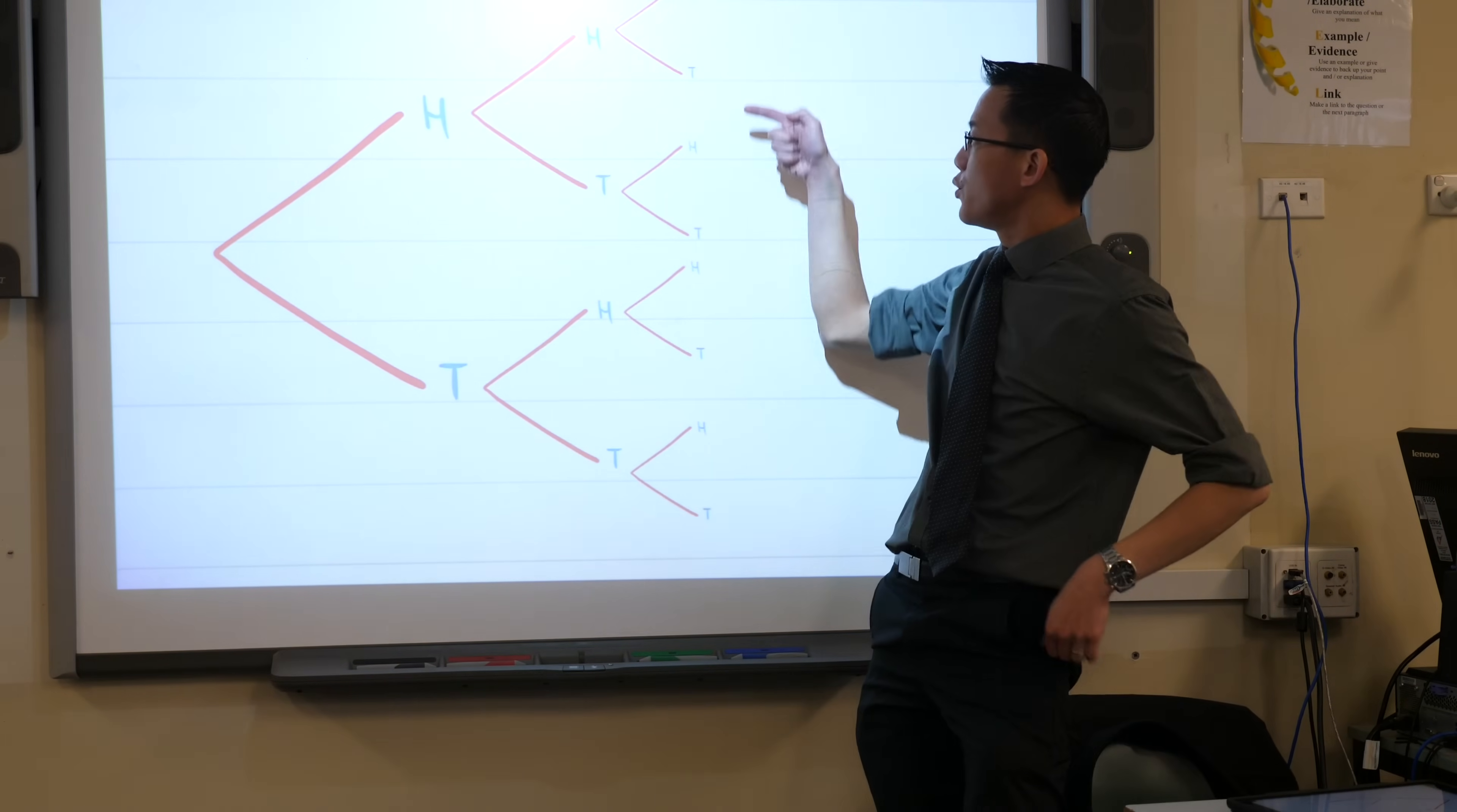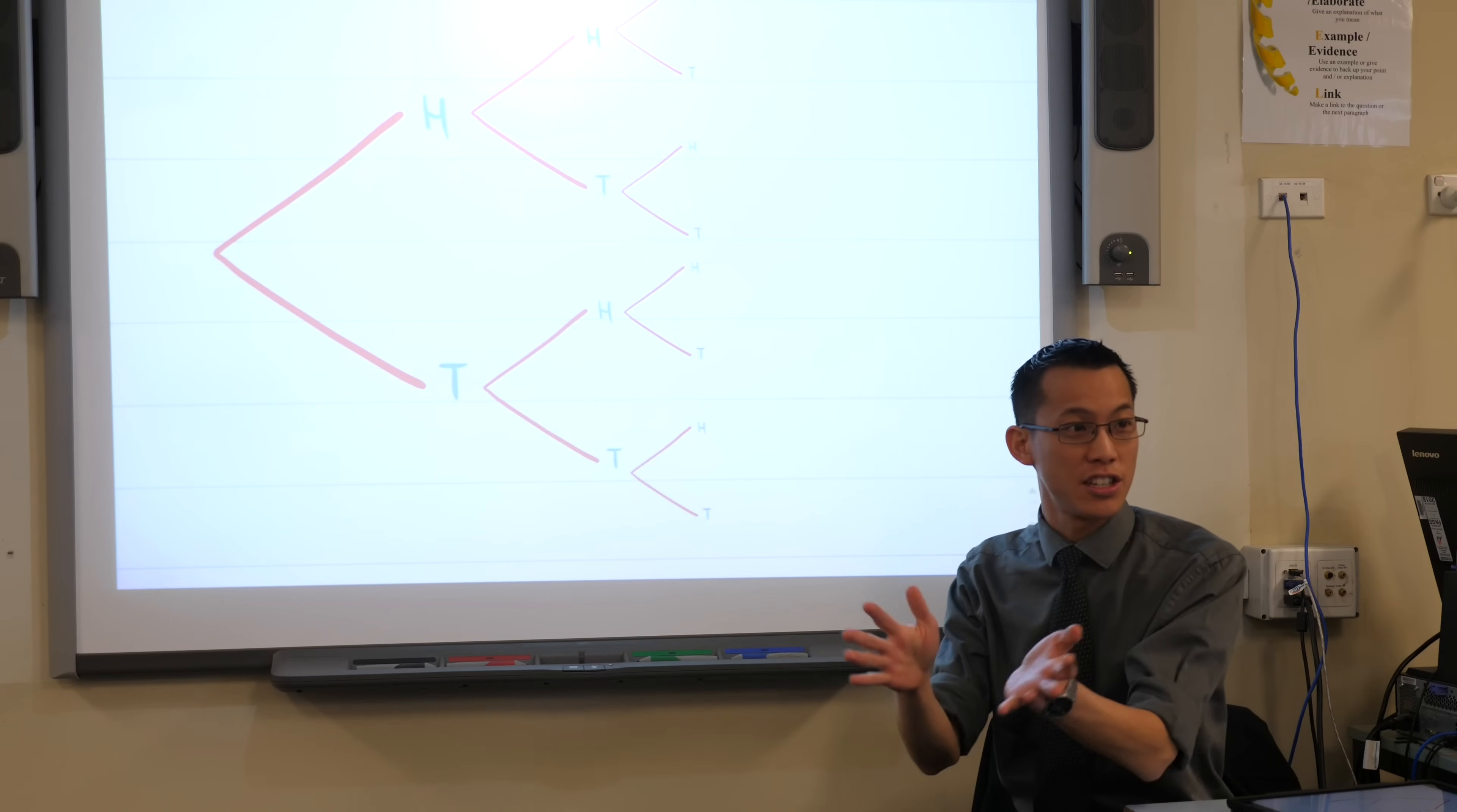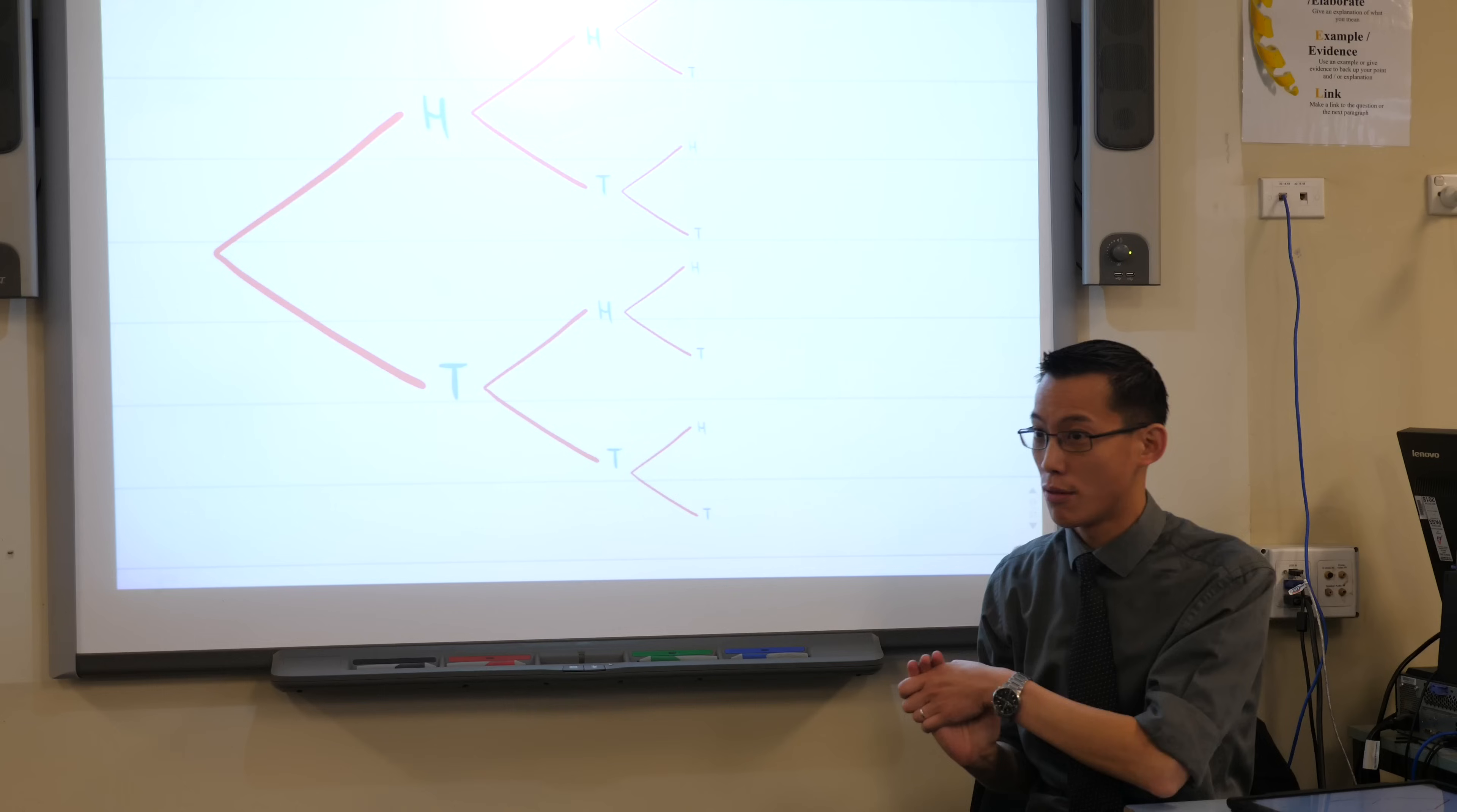Now, you can see what our final sample space is here over on the right-hand side. I've got one, two, three, four, five, six, seven, eight total outcomes at the end, which shouldn't be surprising because each time it splits in two, it bifurcates. So you've got two, two squared, two cubed, that's why you've got eight total possibilities.